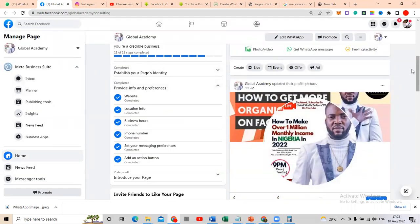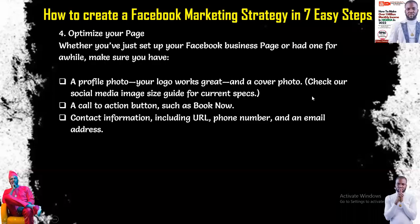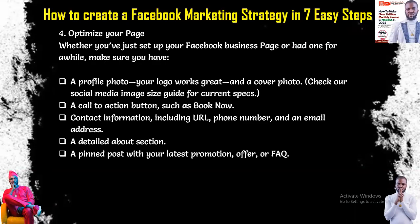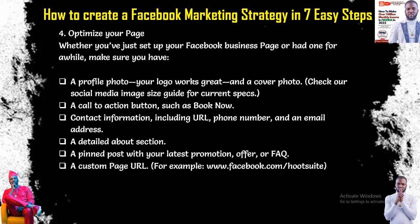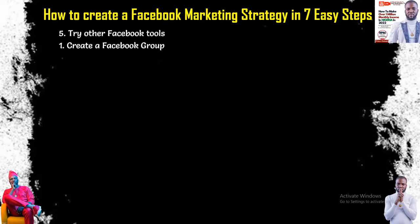Once these are marked off, you'll see a level of completion — for example '13 completed.' Next, invite friends and create a welcome post, and you're completely set up. Make sure you also have a detailed About section, a pinned post with your latest promotional offer, frequently asked questions, your custom page URL — which we've done as 'Global Academy Consulting' — and accurate business categories.